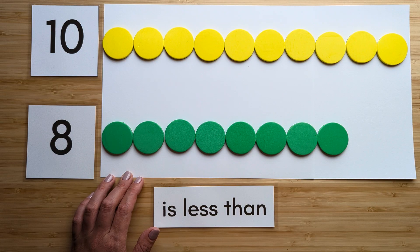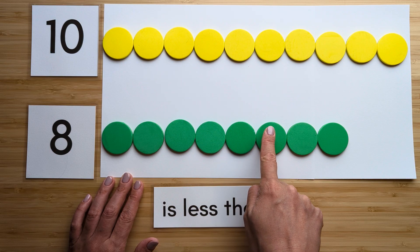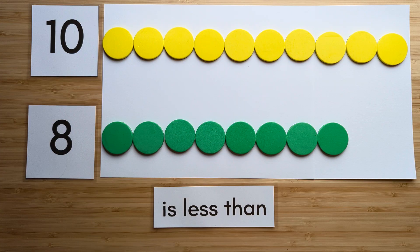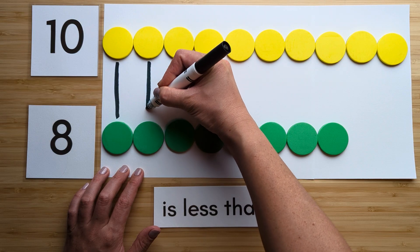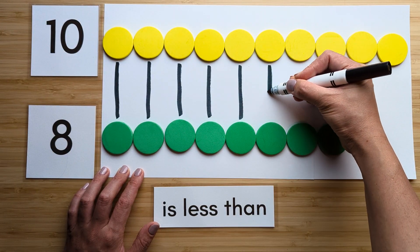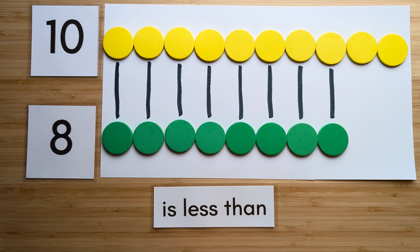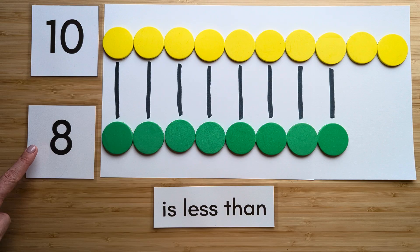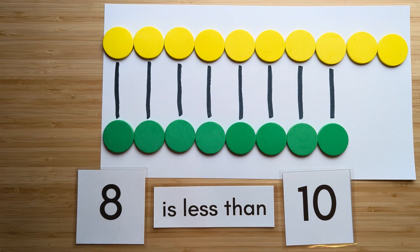Point and count: one, two, three, four, five, six, seven, eight. Now let's compare. Match them up. Which one has extra? Ten has extra. Eight is less than ten. Nice job. Clear off your boards to try the next one.